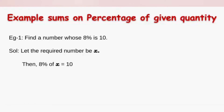8 percent can be written as 8 by 100, multiplied by x. So 8 percent of x means 8 by 100 into x, which gives you 10. Now let us find x by transposing 8 by 100 to the other side, so it becomes 100 by 8. Therefore x is equal to 10 into 100 by 8.